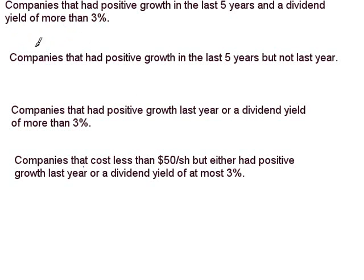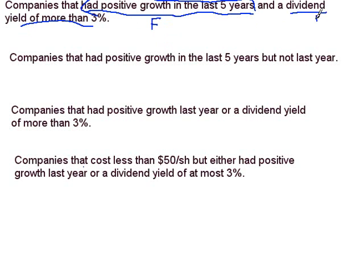One question might be: what are the companies that had a positive growth in the last five years and a dividend yield of more than 3%? Let's break this into pieces — it's separated by the 'and', so there are two conditions. One is positive growth in the last five years; let's designate F as the set of companies that satisfied that condition. Dividends yield of more than 3% — let's call that D. These two conditions combined by 'and' give us F intersect D.